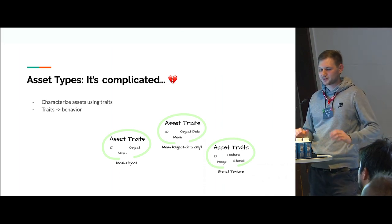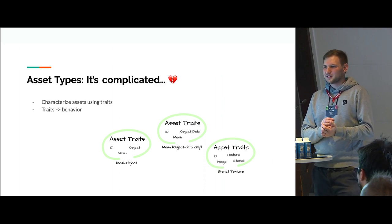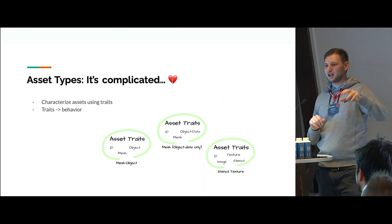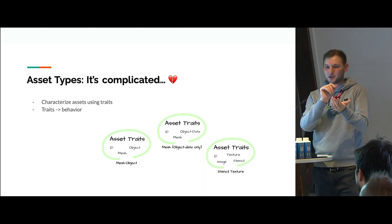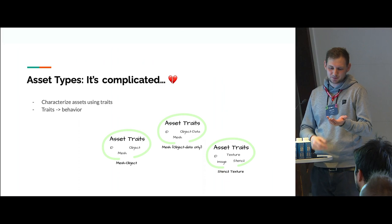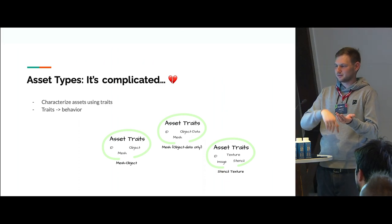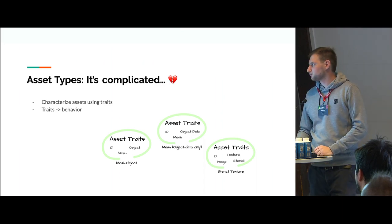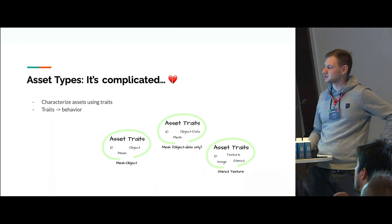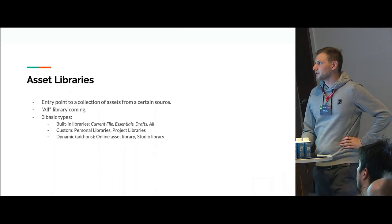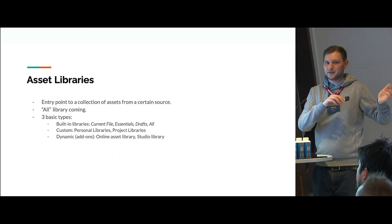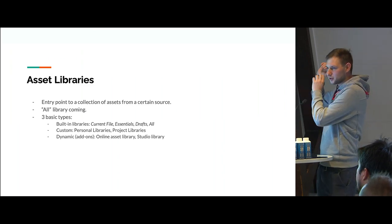So instead of trying to define one fixed type for an asset, it's more like you describe the characteristics of an asset and give it some tags — like 'this is an object, it's a mesh, it's generated by geometry nodes, it can be used as a modifier in the modifier stack' — or 'it's an image, it's not a Blender image yet, it's just something on the hard drive, and it's a stencil.' So you describe the type behavior in terms of characteristics. We call those 'traits' — some tags that Blender automatically sets.